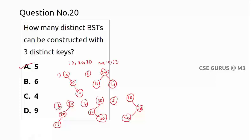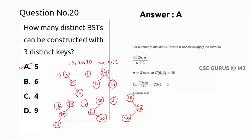For n distinct keys, there is a direct formula: the number of distinct BSTs equals (2n choose n) divided by (n + 1). For n = 3: C(6,3) = 20, divided by 4 = 5. For n = 5: C(10,5) divided by 6. Remember this Catalan number formula for the number of distinct binary search trees with n distinct keys.